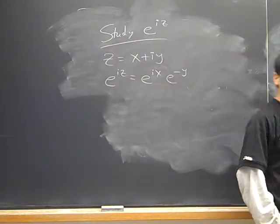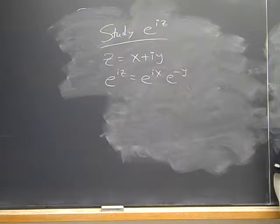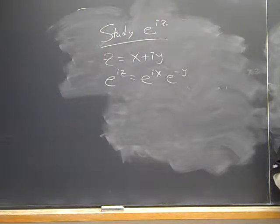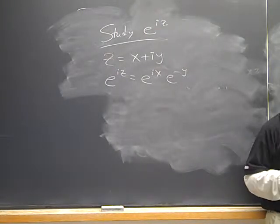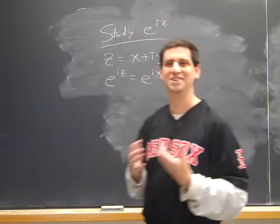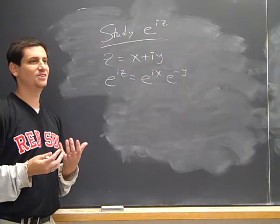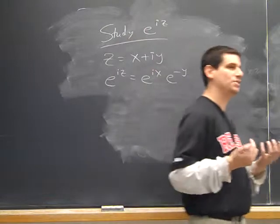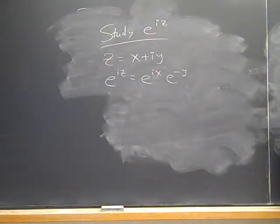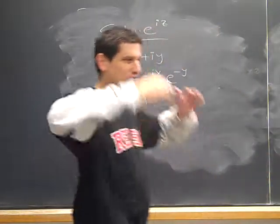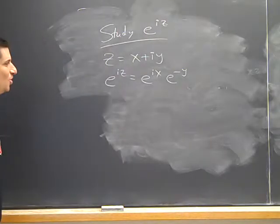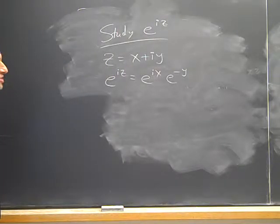There are other shapes than discs — there are rectangles. I claim there is a very natural rectangle to study this on. A width of 2π makes sense, not height 2π, because e^(ix) repeats every time x increases by 2π. So I need to understand this map on a certain region, not the whole complex plane.